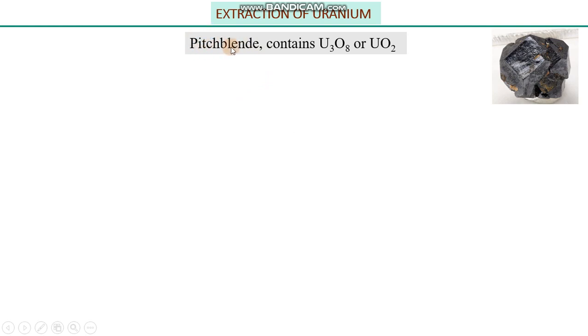The main source of uranium is pitchblende, also called uranite. This is an example of a rock that can be obtained from different sources and different regions of the world. The internal contents of the ore can also vary depending on the nature and place of the source. Normally it contains uranium oxide in the forms U₃O₈, where eight oxygens are attached to three uranium atoms, and UO₂, where two oxygens are attached to one uranium. These two uranium oxides are the main constituents of uranite or pitchblende.